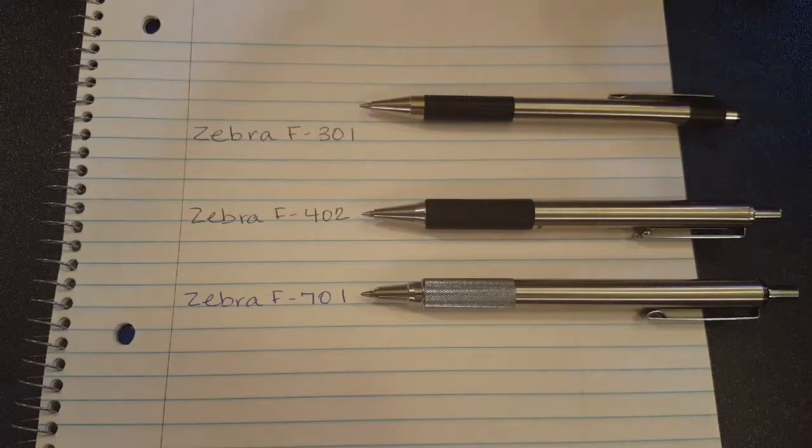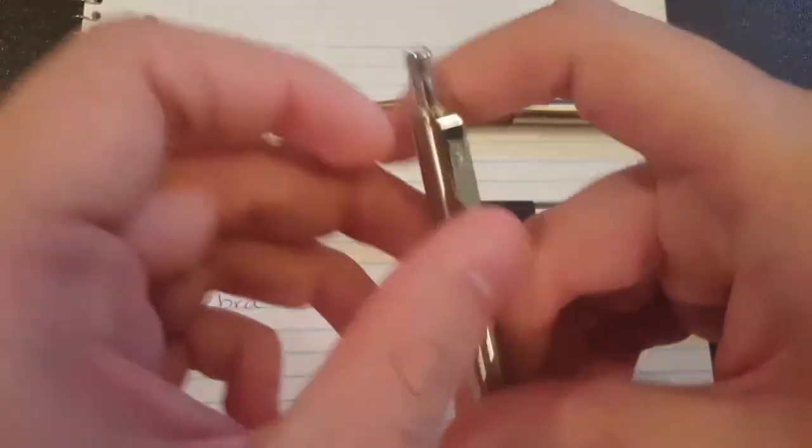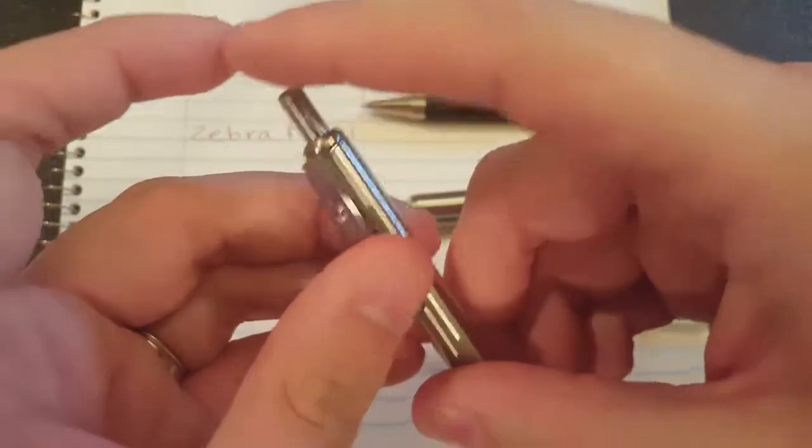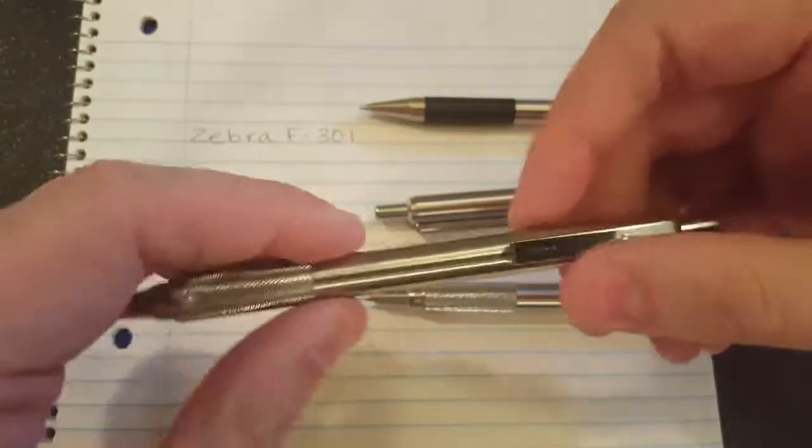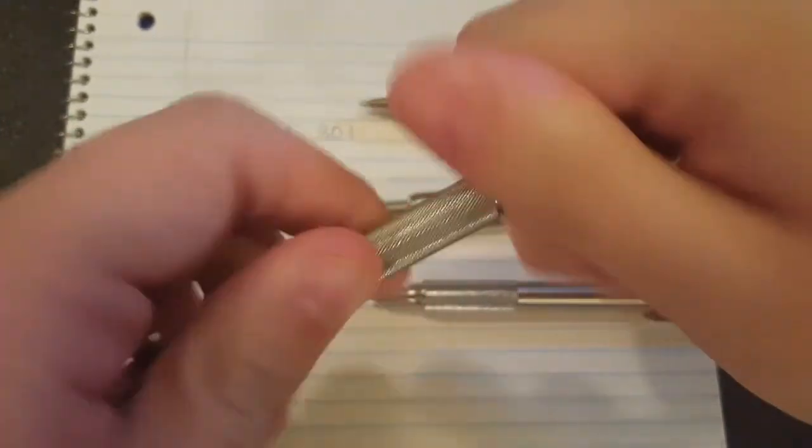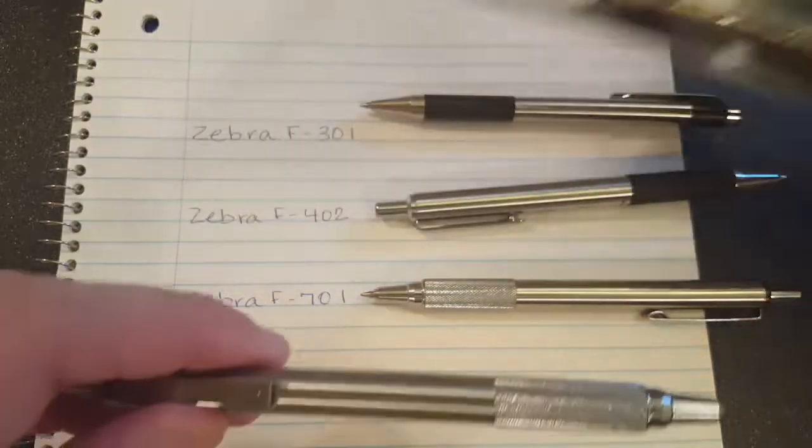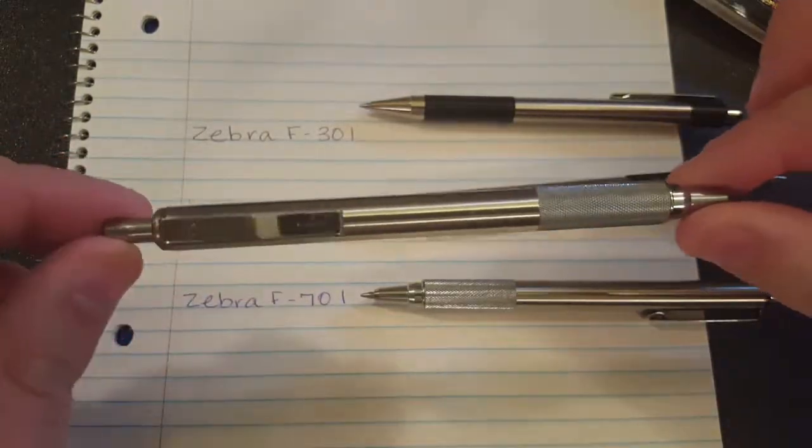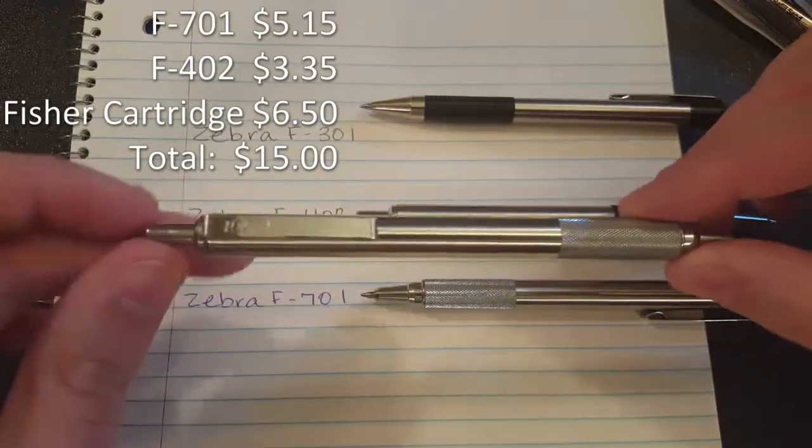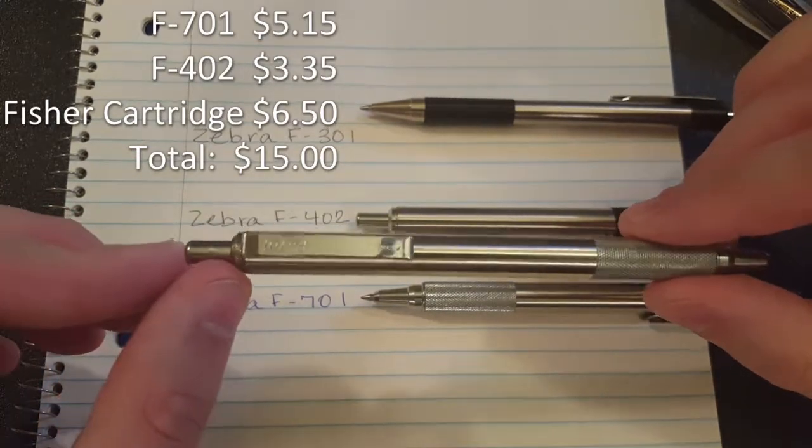There's a very popular modification that people will make to the F-701 to make a solid steel one. What they do is they take the clicker off of an F-402 and they put it on an F-701. There are video tutorials if you want to try to do this. And then another popular modification they will do is they will take out the cartridge and put in a Fisher Space Pen cartridge. And what you get for that is a pen that total cost is under $15 for the cost of one F-701, one F-402, and a Fisher Space Pen cartridge. And you get a Space Pen for under $15, which even your cheapest Space Pens by Fisher are about $18.